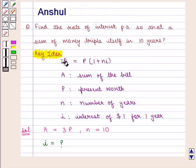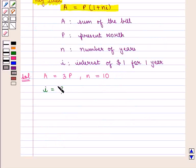From the key idea we know that A is equal to P into 1 plus N into I. So we have 3P is equal to P into 1 plus 10 into I.